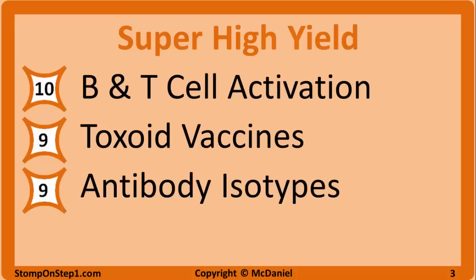With a high yield rating of 9, we have antibody isotypes. You want to know the different subtypes of antibody and in what situations you see the most, how the mix of isotypes changes during the shift from acute to chronic inflammation, whether or not the different isotypes can cross the placenta, and you should focus primarily on IgG and IgM, as most of the questions will come from there, but you should know the others as well.